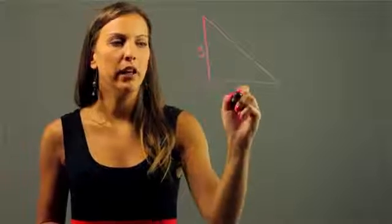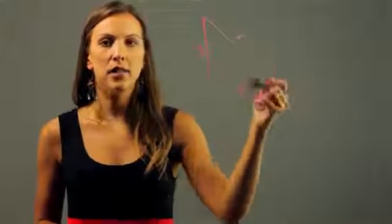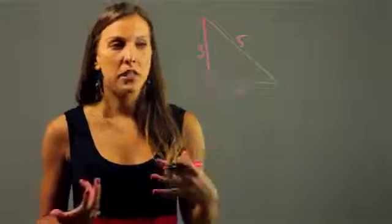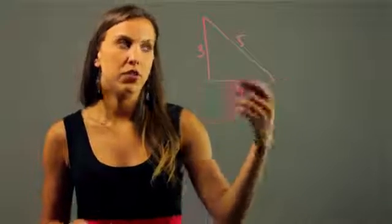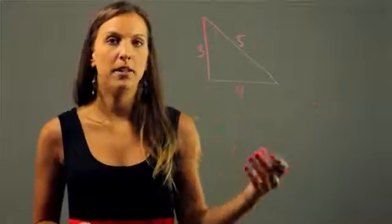So an example might be a 3, 4, 5 triangle. Each of the sides is an integer, just meaning a number that is a whole number. Integers are normally negative and positive whole numbers and zero.